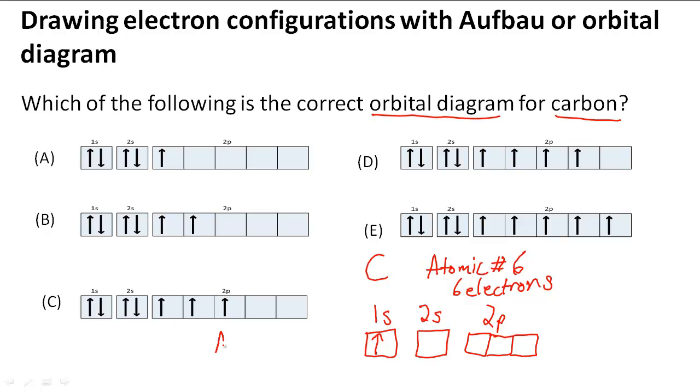So remember we still have to use the rules that we learned before, Aufbau principle. So I'm going to fill that in and remember that by the Pauli exclusion principle we can't have electrons with the same quantum numbers so it has to be spinning in a different direction and that means it's spinning, that represents that it's spinning in a different direction.